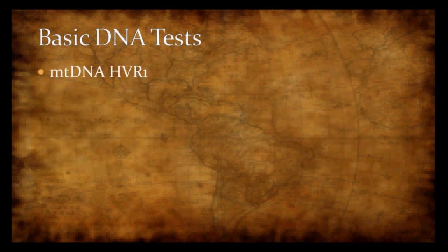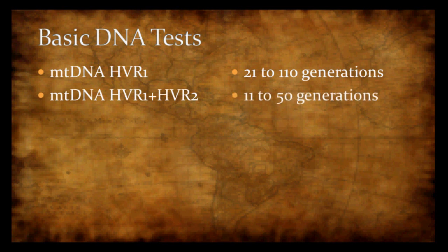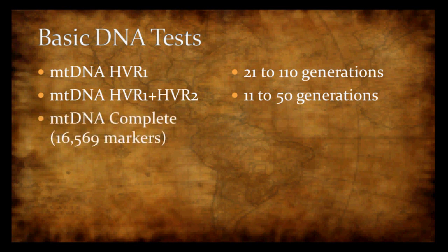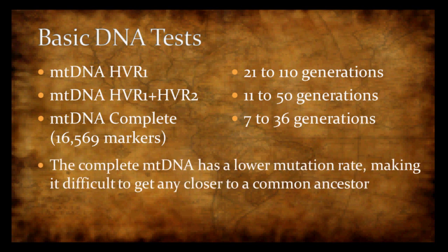For mitochondrial DNA, the hypervariable region 1 gets you 21 to 110 generations back. Add hypervariable region 2 and you can cut that to 11 to 50 generations. But if you do the entire test — the complete coding region, all 16,569 markers — you only get 7 to 36 generations back, because the complete mitochondrial DNA has an even lower mutation rate than the hypervariable regions, making it difficult to get closer to a common ancestor.